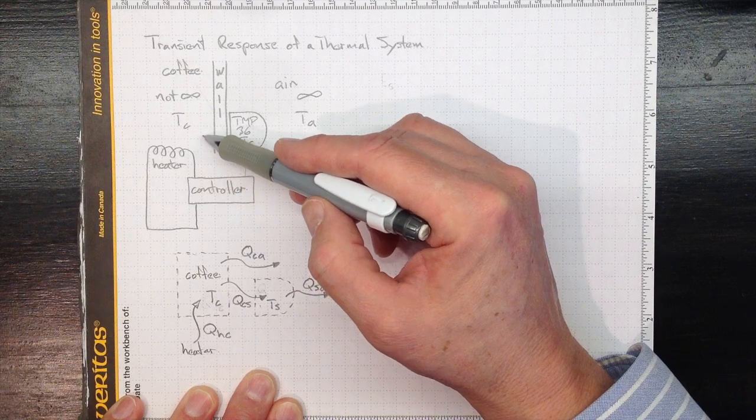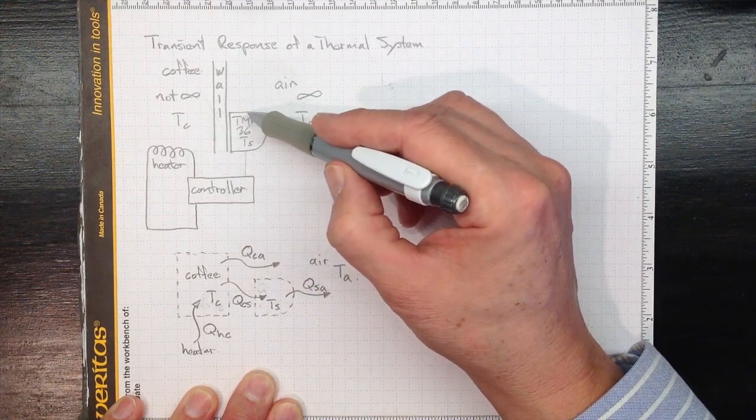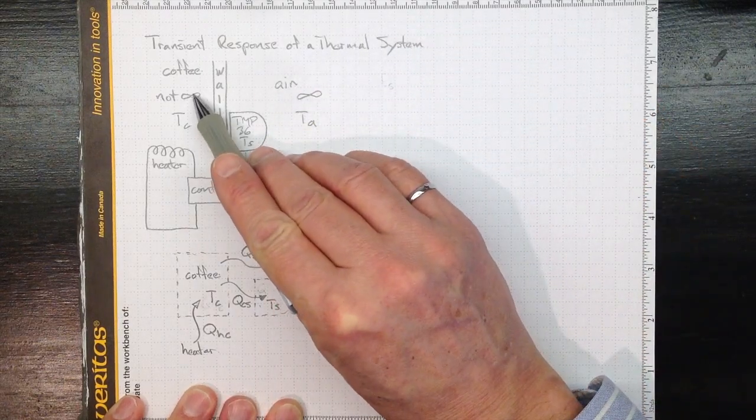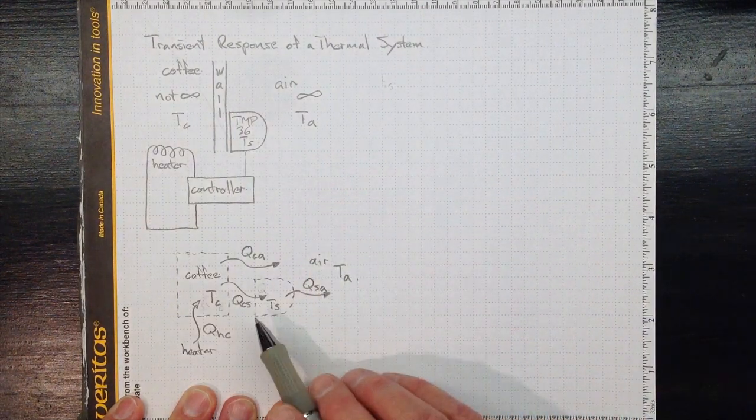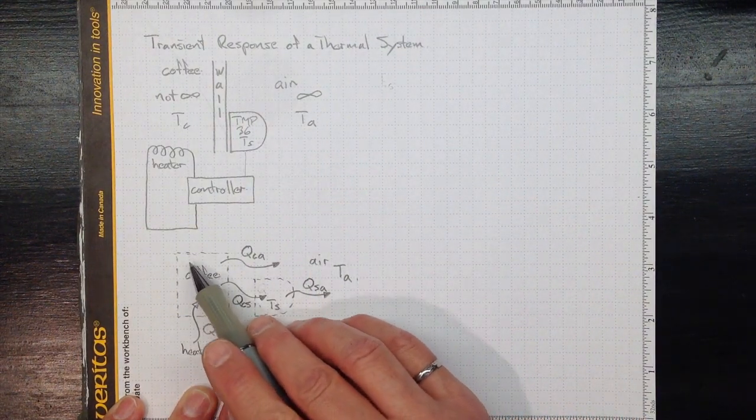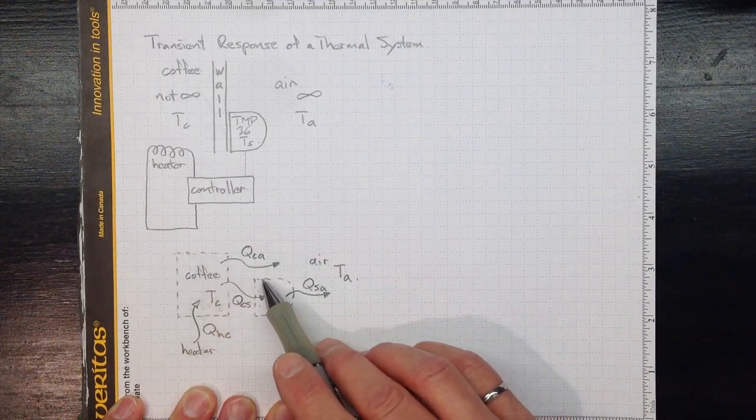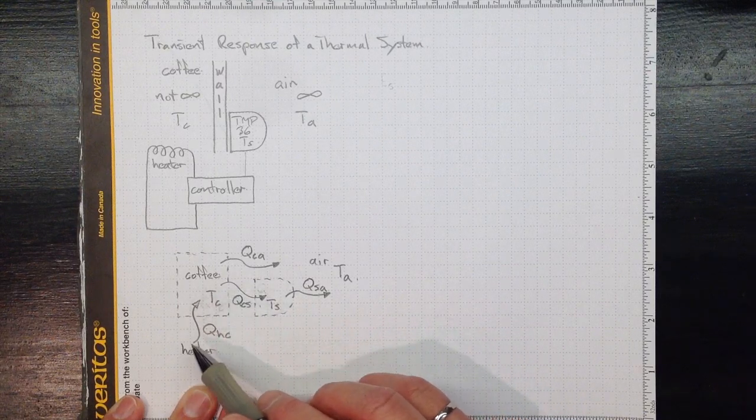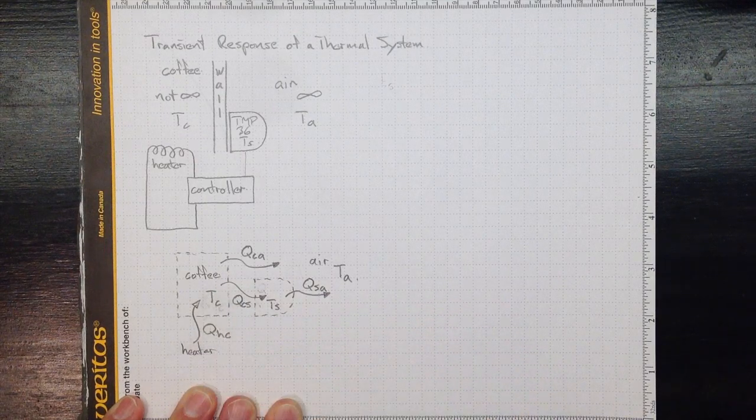So we can do the same kind of balance that we did when we looked at just the sensor and how its transient response behaved, except this time we're going to have to follow both the transient response of the coffee and the sensor. So if we do two control masses we'll have a mass of coffee and cup here and here's the mass of the sensor, and they're interacting with each other and they're both interacting with the air. In addition, the heater is interacting with the coffee.